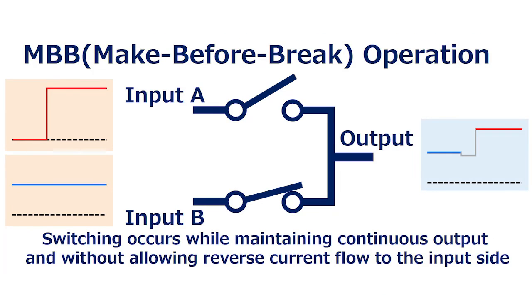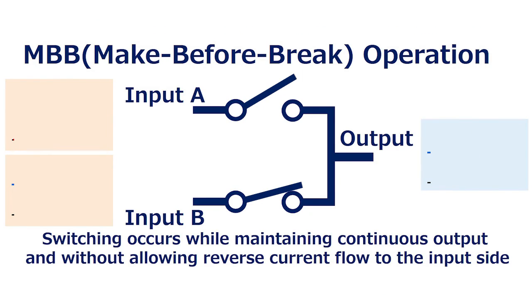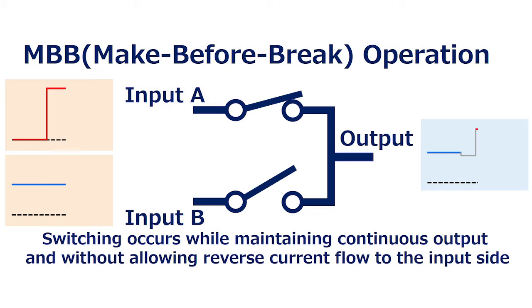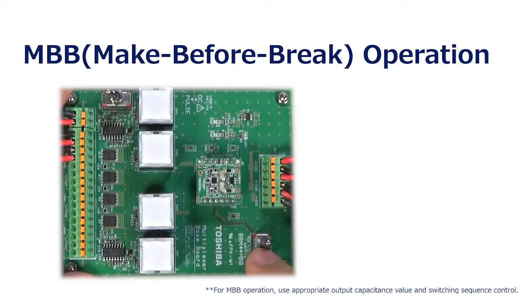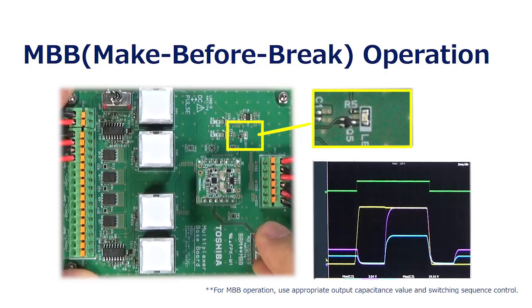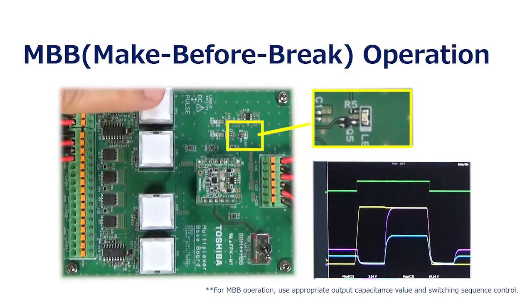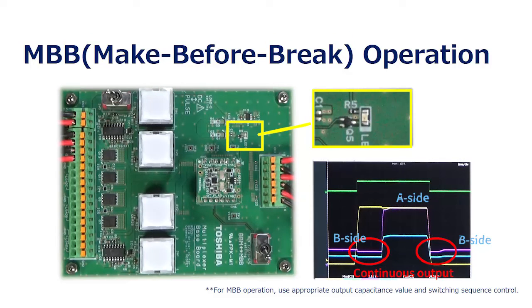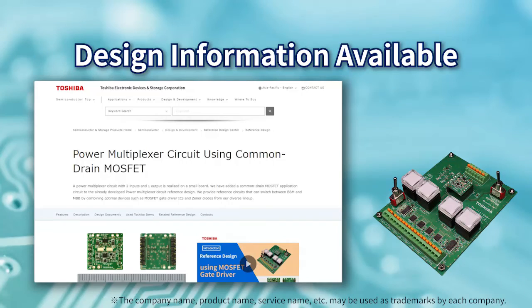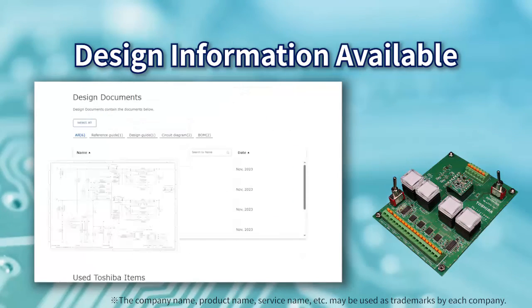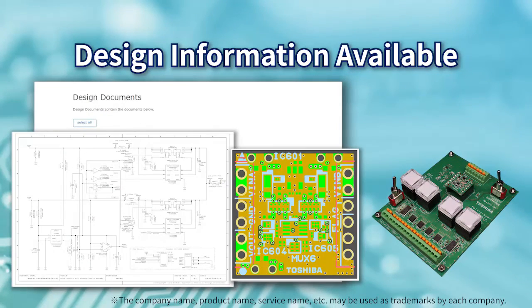During MBB, that is make-before-break operation, the switching occurs while maintaining continuous output and without allowing reverse current flow to the input side. It is generally called an ideal diode. The board is set to MBB mode and switching operation is performed. It can be seen that the switching operation is performed without turning off the output. Circuit and pattern design information of the circuit board is published as a reference design, so please use it for your design.